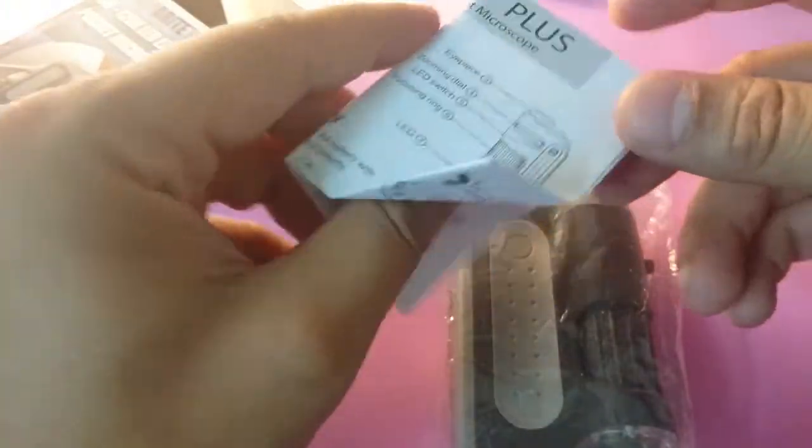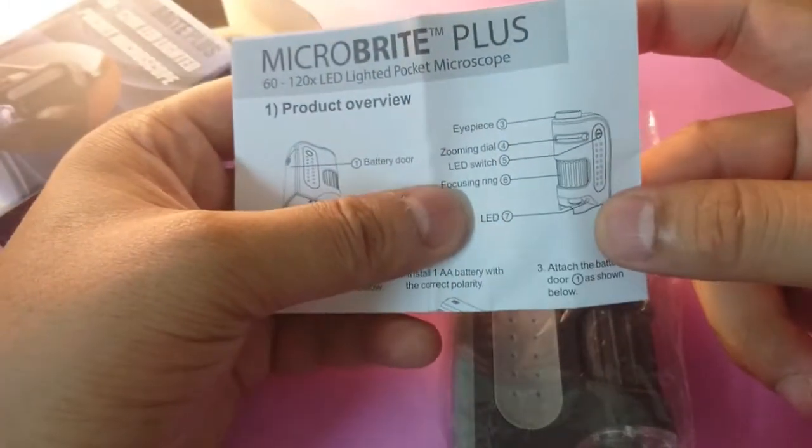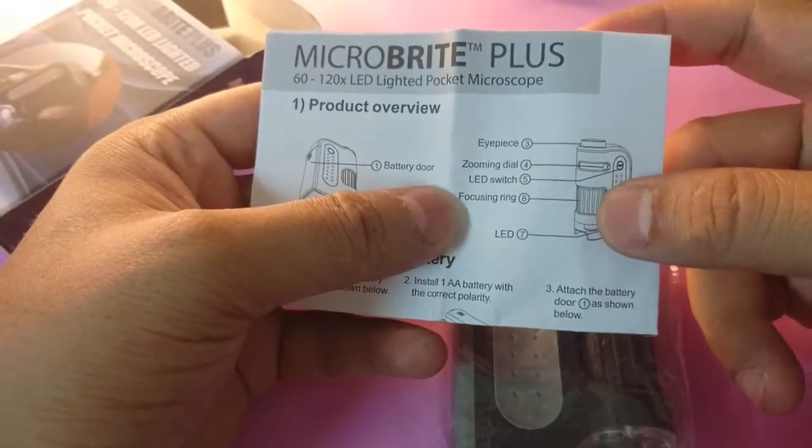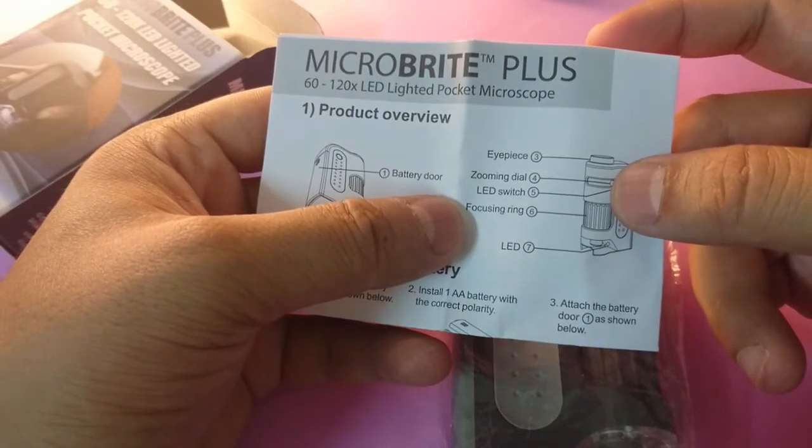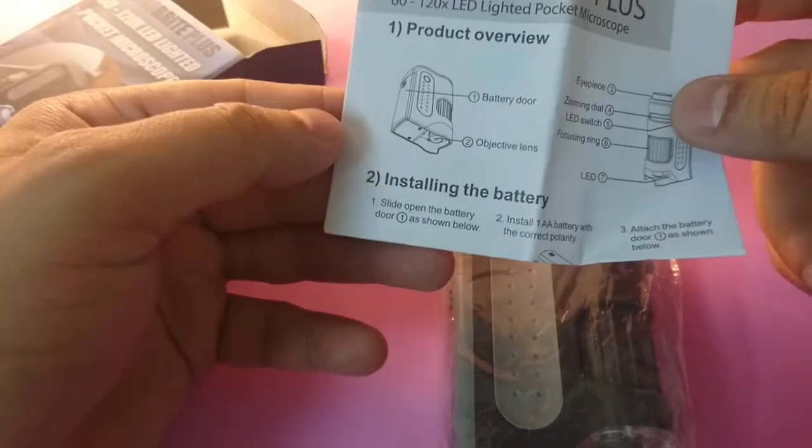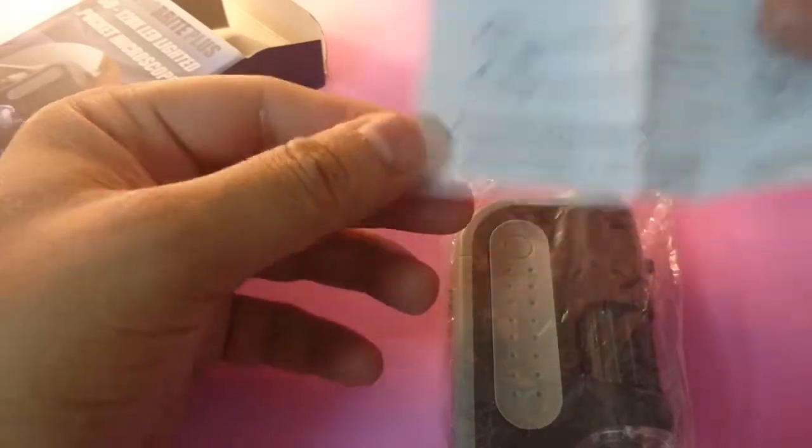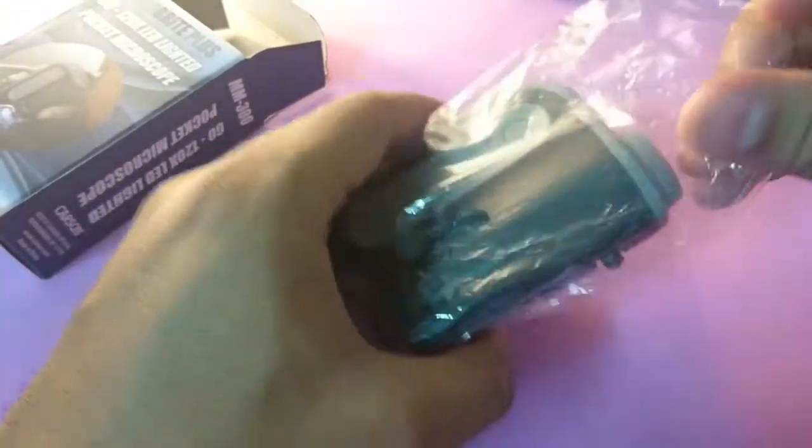Here the manual says that there is a LED light, there is a focusing ring, there is a switch for the LED, a zooming dial for the eyepiece and the installation requires a AA battery for the LED.